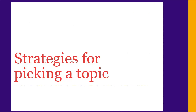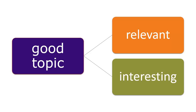First, we'll start with tips for identifying a topic. You'll need to pick a topic that's interesting to you, since you'll be spending a lot of time on it. You'll also need to make sure it's relevant to your course. Read the assignment instructions carefully to make sure you know what's required before you start, and clarify with your instructor if you need to.